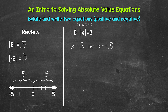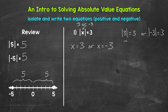We can always check our solutions by plugging them in for the variable. The absolute value of three equals three, and the absolute value of negative three equals three. The absolute value of three is three, and the absolute value of negative three is three. So we have the correct solutions. Let's move on to number two.